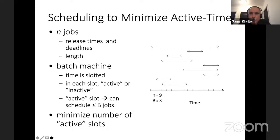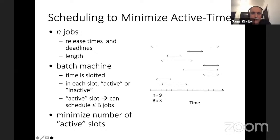Let's jump into the problem. What do I mean by minimizing number of trips? We have n jobs, each with a release time — the earliest time it can be done — and in the general model, each job has a length and a deadline. Think of these as windows of time in which the job must be done. We have a batching machine; we decide whether the machine is on or off, like scheduling a trip or not. Whenever the machine is active, it can perform up to B jobs in that time slot. Our goal is to minimize the number of trips, i.e., the number of active slots.